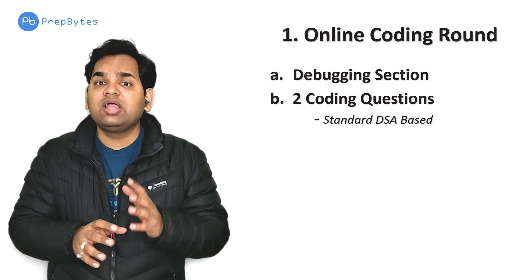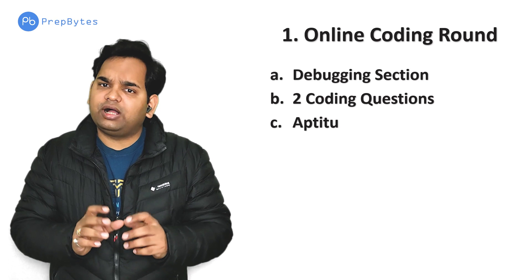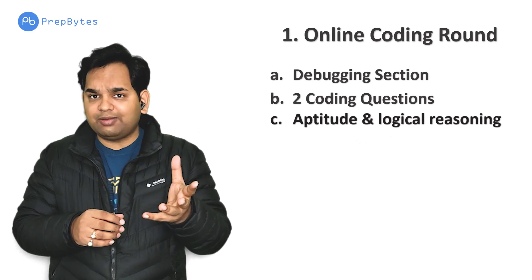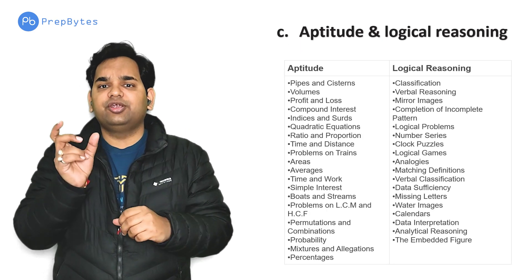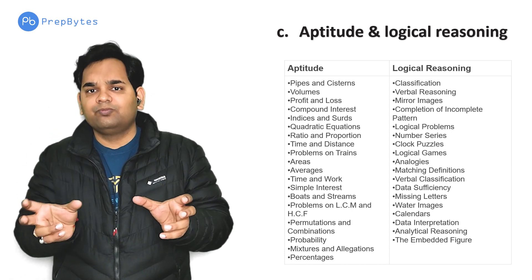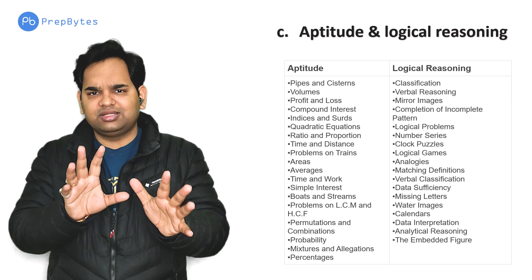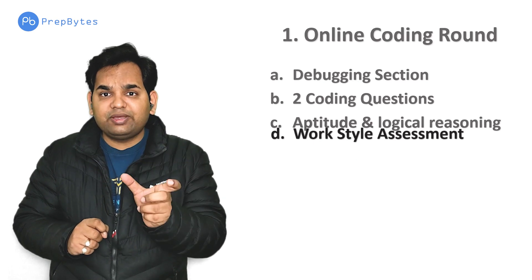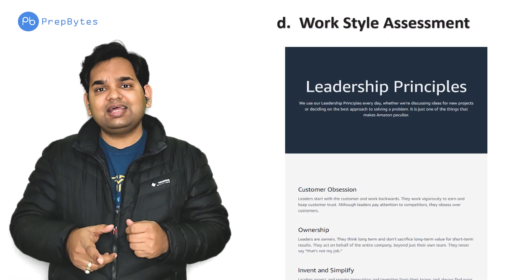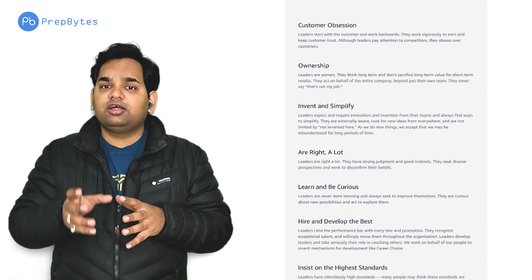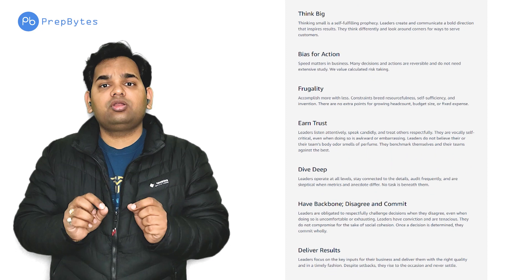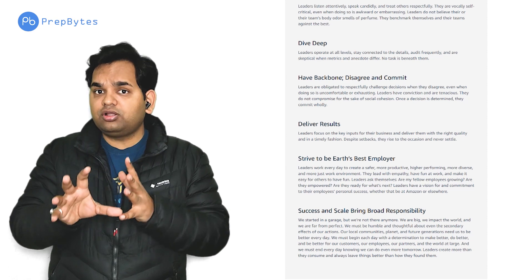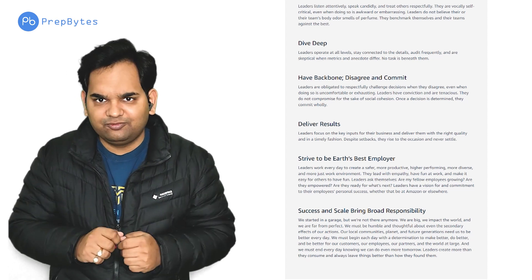The third section is an aptitude part — easy to medium questions like coding-decoding, where a word is coded into something else and you must find what another word is coded into. The fourth section can be a work style assessment based on Amazon's Leadership Principles. You should read and remember the Amazon Leadership Principles, as questions on them can also appear in the face-to-face interview rounds.